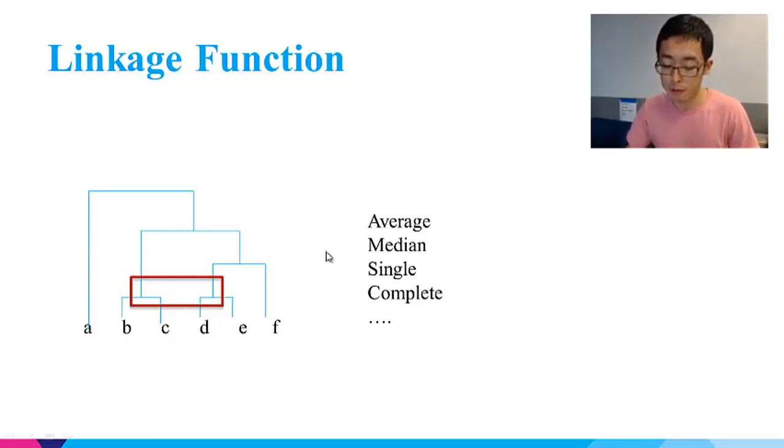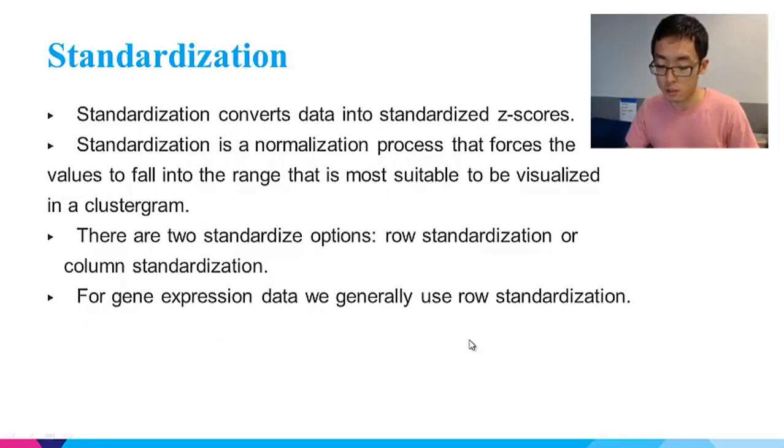One more thing to consider is standardization. Standardization converts data into standardized z-scores. Z-scores mean how many standard deviations the value is from the mean. If a value equals to the mean plus two standard deviations, its z-score will be two. Standardization is a normalization process that forces the values to fall into the range that is most suitable to be visualized in a clustergram.